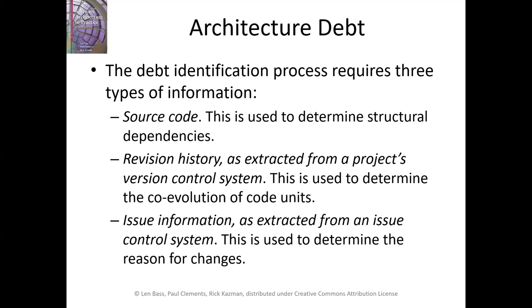The third place to look is your issue information system. Usually issues are stored in an issue control system, and that can be used to determine the reason for changes — whether it's fixing a bug or a user-requested modification. You can analyze debt by identifying areas of the architecture experiencing unusually high rates of bugs and attempt to associate those symptoms with design flaws.